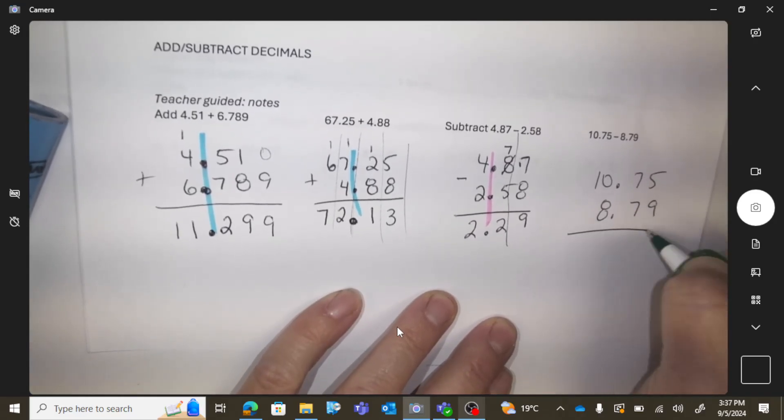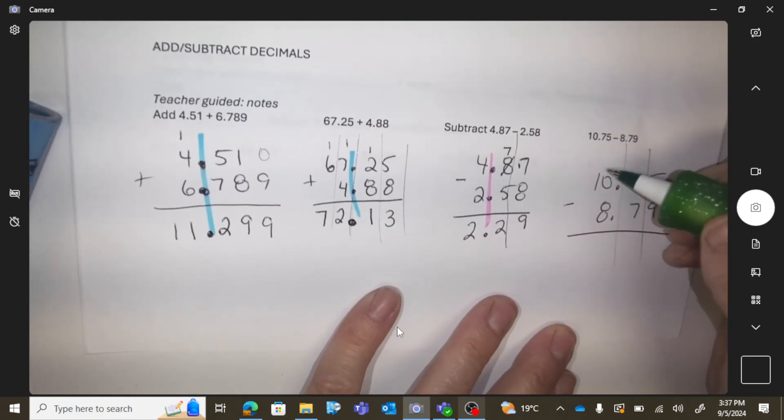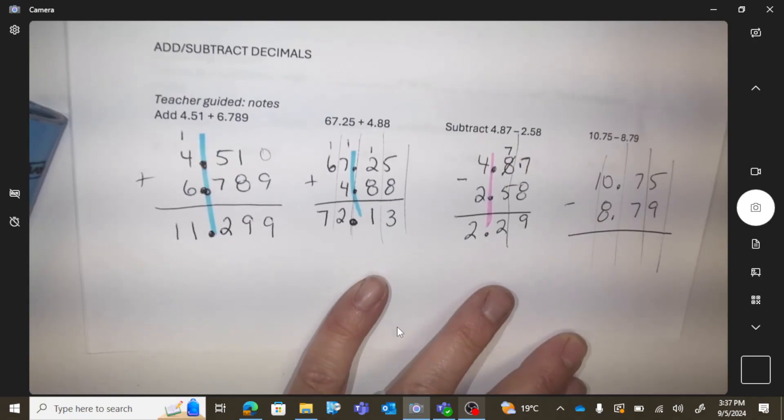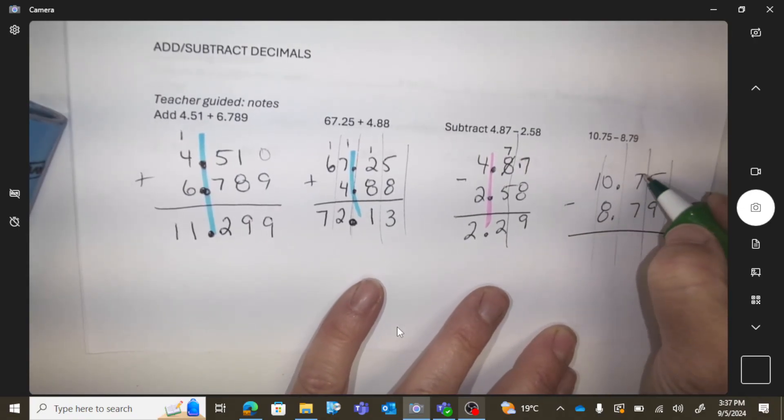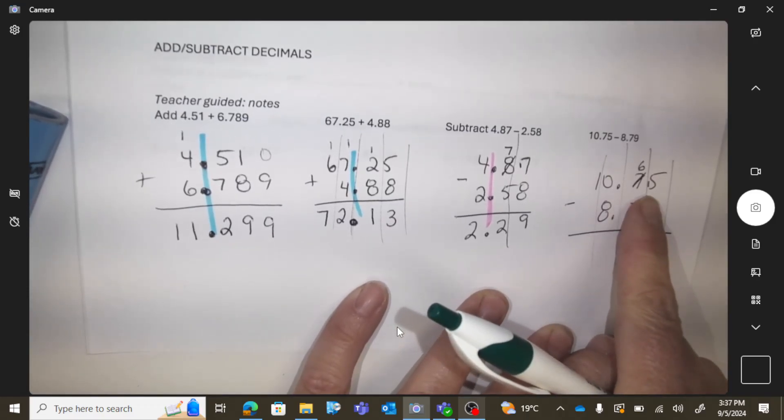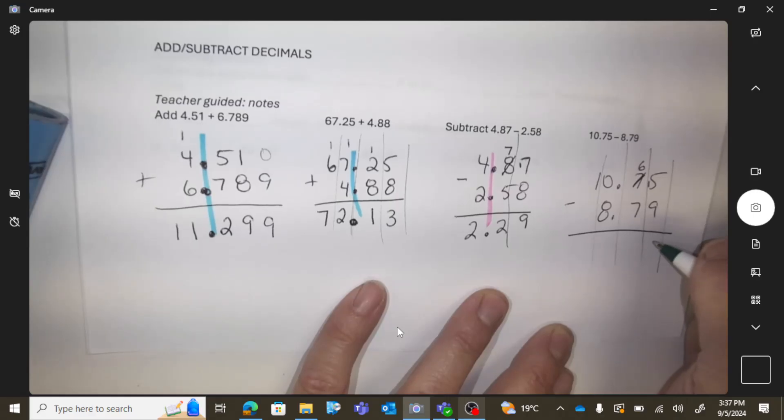This one's going to have a little bit of borrowing. I can't take away nine from five, so I'm going to borrow. I'll change that to a six, and borrowing moves a ten over, so it's fifteen. Fifteen minus nine is six.